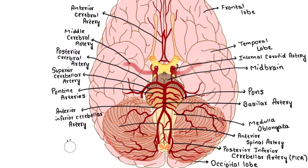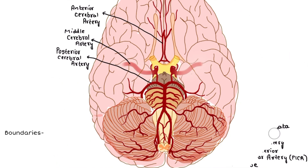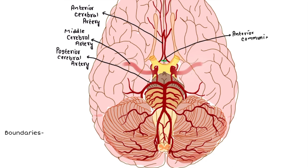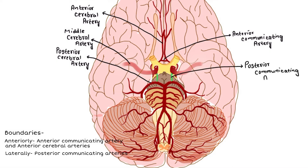Now let's talk about the boundaries of the Circle of Willis. The anterior communicating artery along with the anterior cerebral arteries make the anterior border. The lateral border is formed by the posterior communicating arteries, and the posterior border is formed by the posterior cerebral arteries.